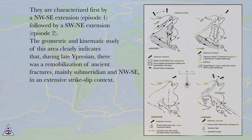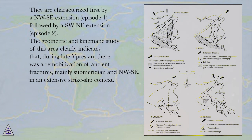The results show that the finite Uprisian faulting event is the result of two successive episodes, very close in time: first characterized by a NW-SE extension (Episode 1), followed by a SW-NE extension (Episode 2). The geometric and kinematic study clearly indicates that, during late Uprisian, there was a remobilization of ancient fractures, mainly sub-meridian and NW-SE, in an extensive strike-slip context.